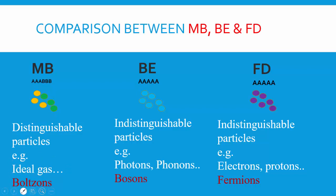Particles that follow Maxwell-Boltzmann statistics are collectively called boltzons. Particles that follow Bose-Einstein statistics are called bosons. Particles that follow Fermi-Dirac statistics are called fermions. So electrons and protons are called fermions, while photons and phonons are bosons.